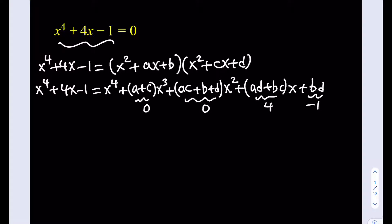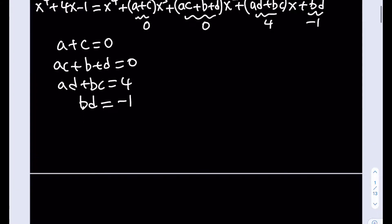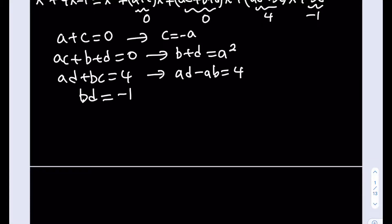So let's write down the system: a plus c equals 0, ac plus b plus d equals 0, ad plus bc equals 4, and bd equals negative 1. From a plus c equals 0, we get c equals negative a. Substituting into the second equation gives b plus d equals a squared. And substituting into the third gives ad minus ab equals 4, which factors as a times the quantity d minus b equals 4.